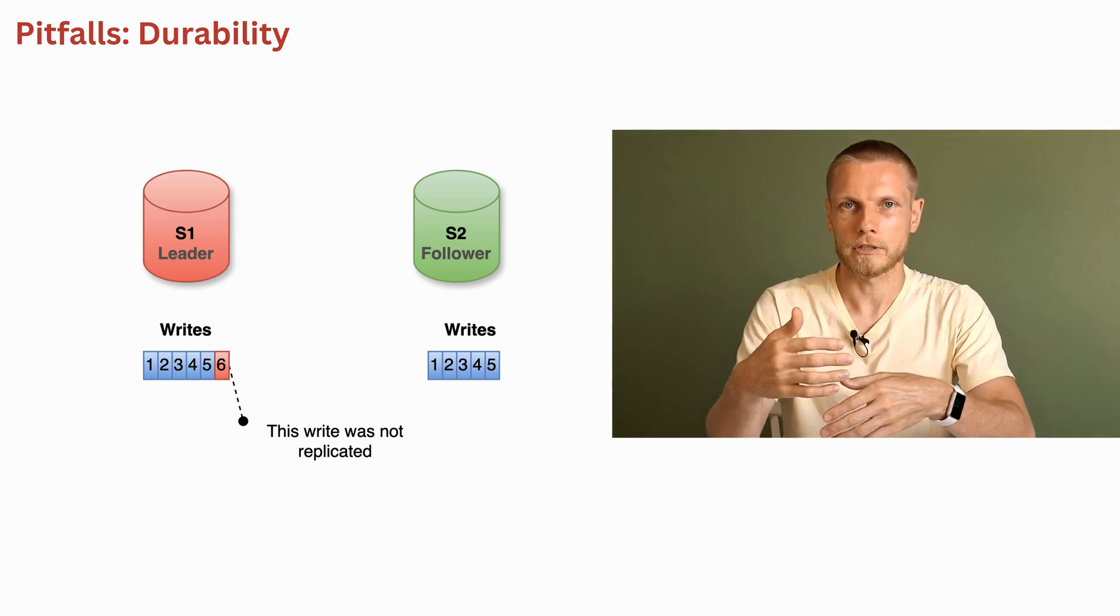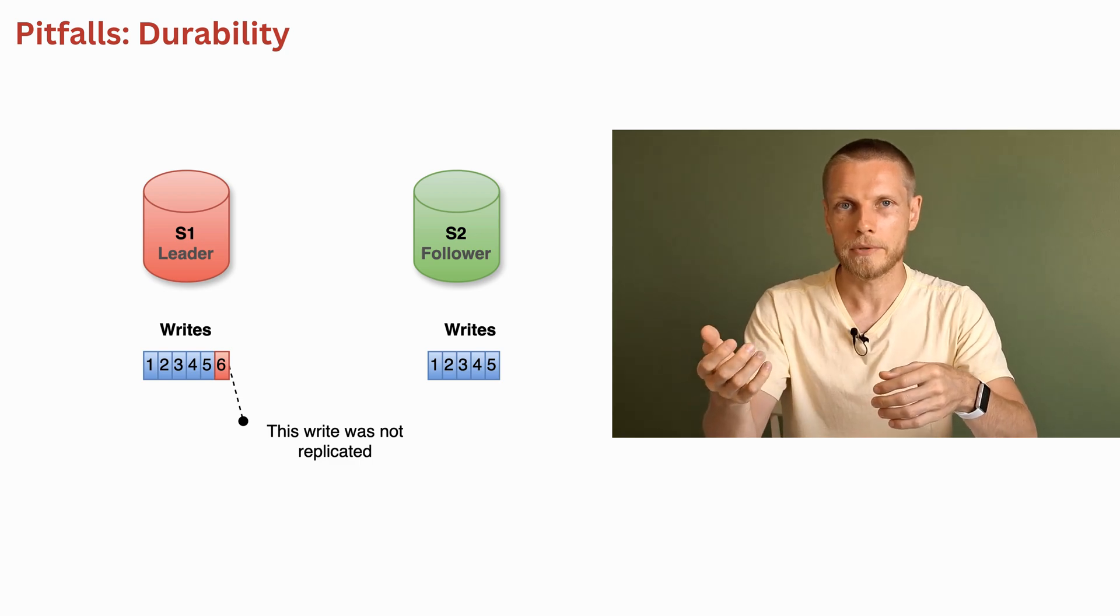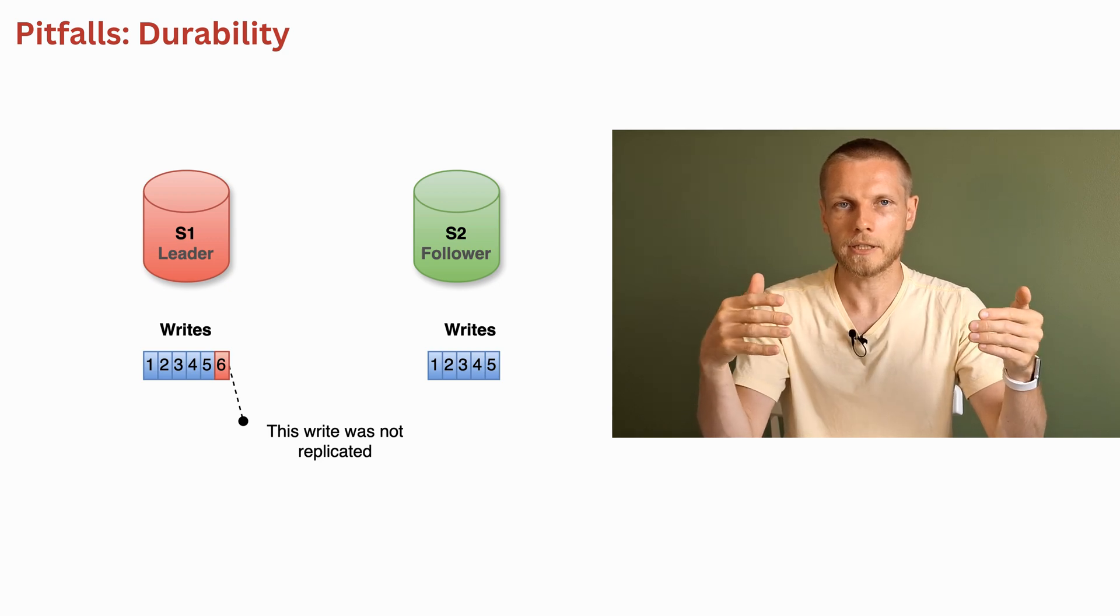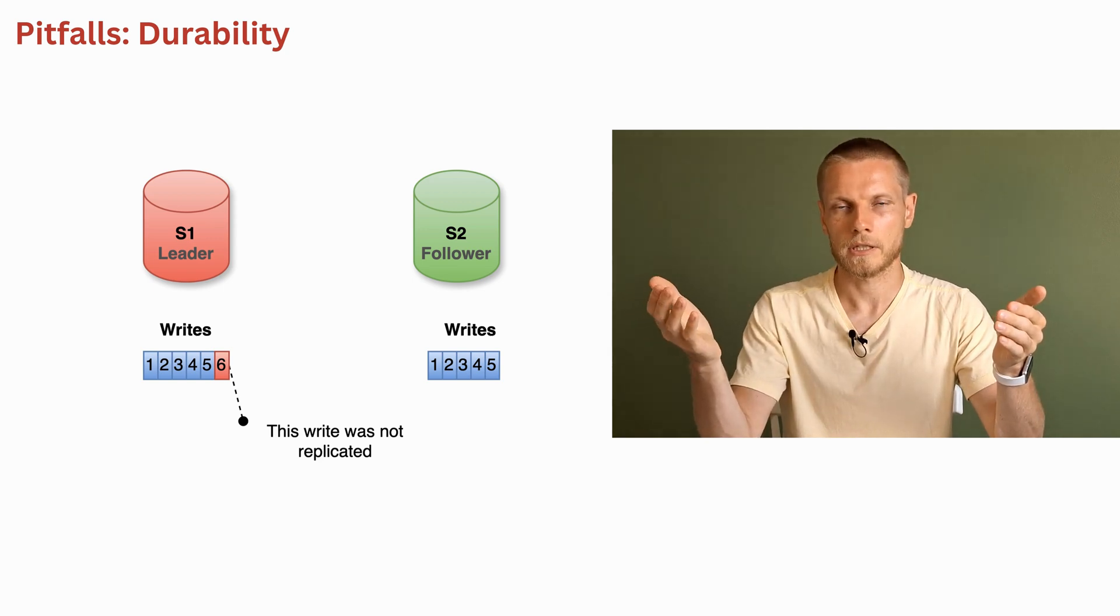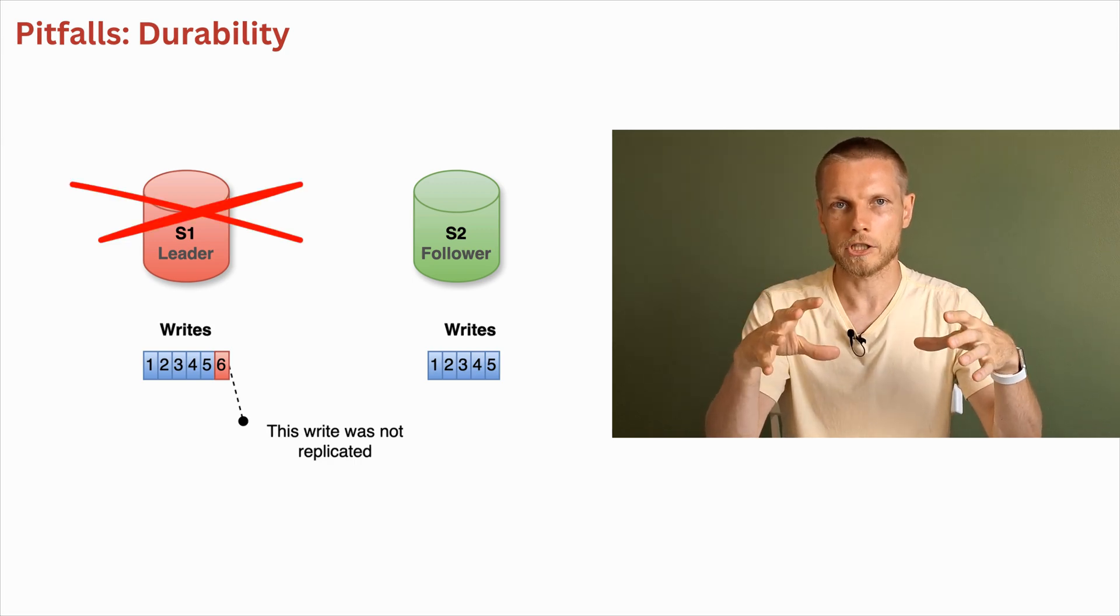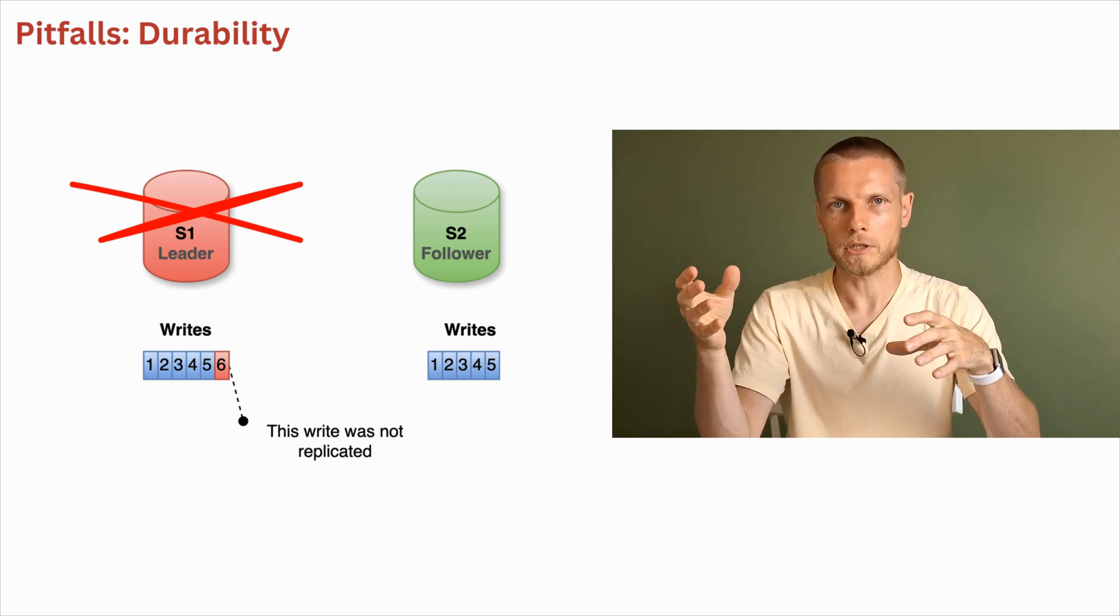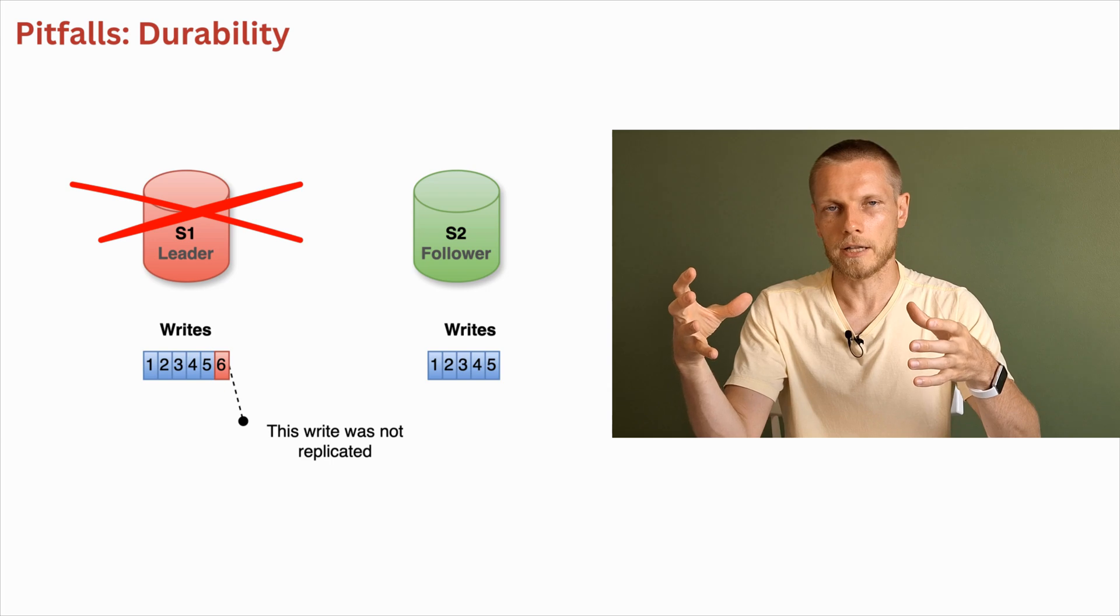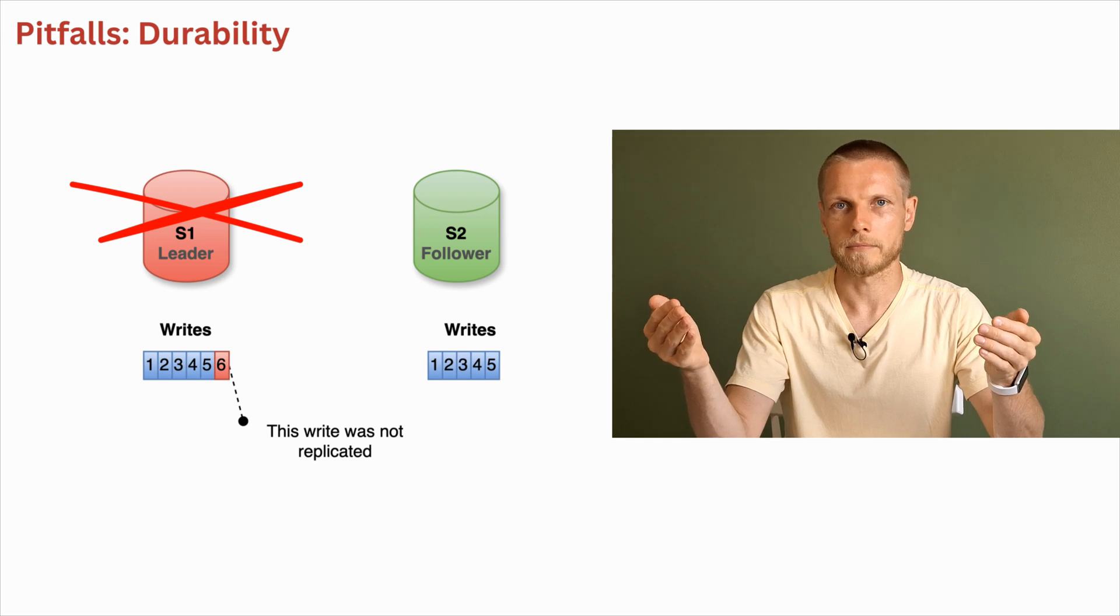Another pitfall of failover process is that writes potentially could be lost. Durability means the property of the system not to lose acknowledged writes even in case of some failures of machines. In case of synchronous followers, no data will be lost in case of failover, because every acknowledged write is already present on some follower. And after the failover, even if a leader does not recover, all the writes are already there and the new leader which was promoted from follower will contain all the present writes.